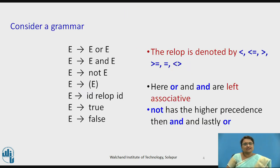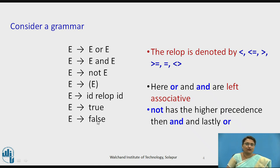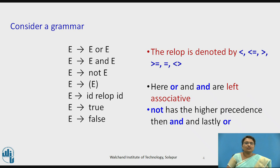Consider this grammar — this is the grammar provided for Boolean expressions. The expression contains the operators OR and NOT. The expression may be in brackets, or it may be in the form of id, relational operator, and id. The relational operators may be less than, less than or equal to, greater than, greater than or equal to, equal to, or not equal to. It may also have the values true and false. OR and AND are left associative, and regarding precedence: NOT has the highest precedence, then AND, then OR.